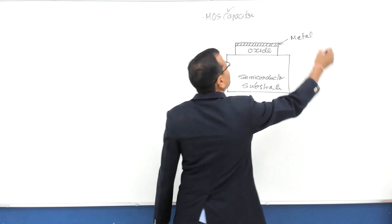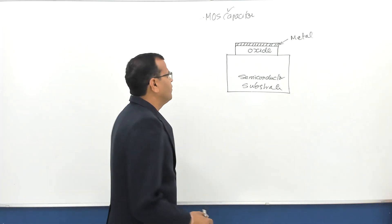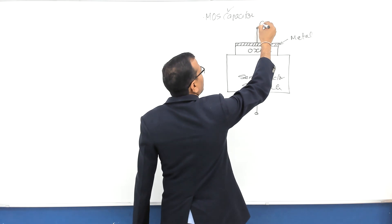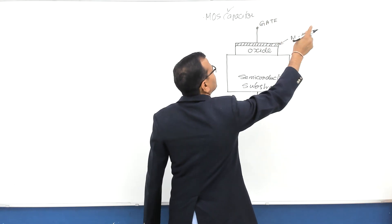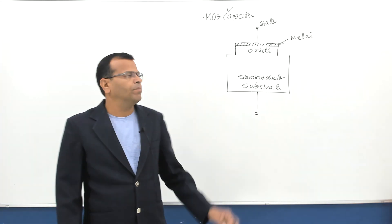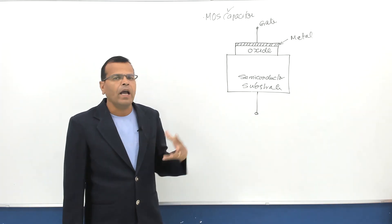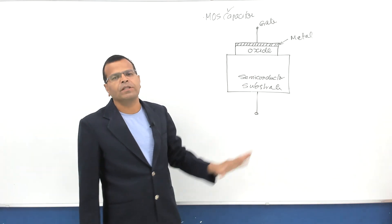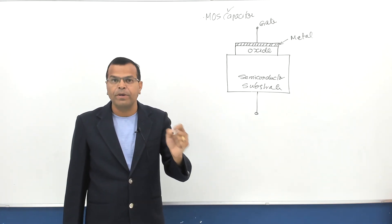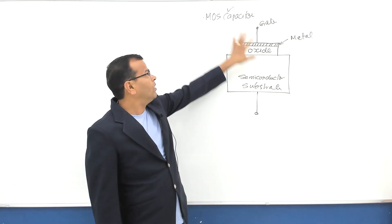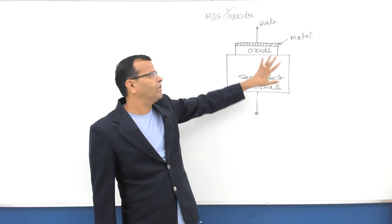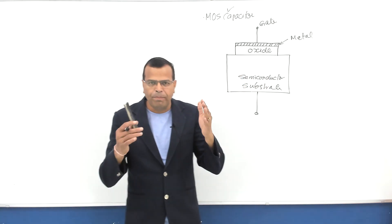Above the oxide layer we have a metal deposited on it. We have two terminals: one is connected to the metal, and this terminal is known as the gate terminal. This is the layer diagram of the metal oxide semiconductor. The MOS capacitor is not used separately — it is basically the building block of the metal oxide semiconductor field effect transistor, that is MOSFET.